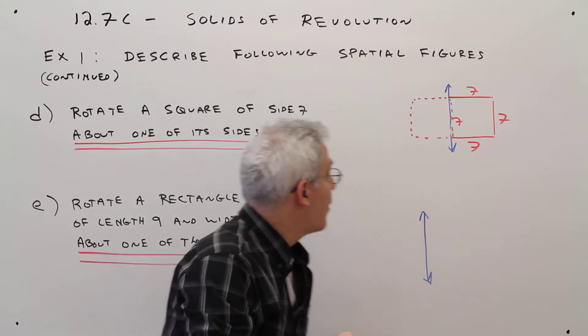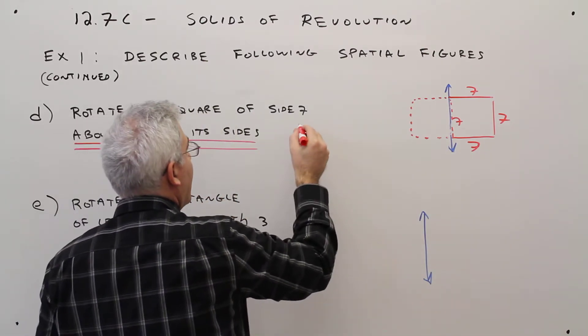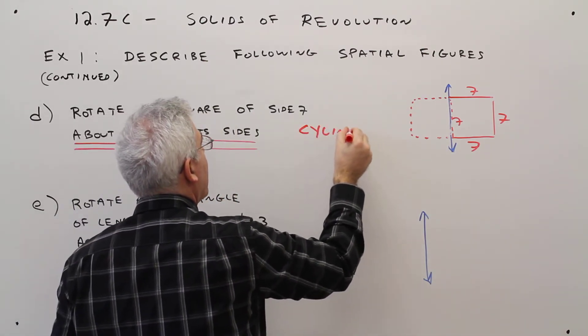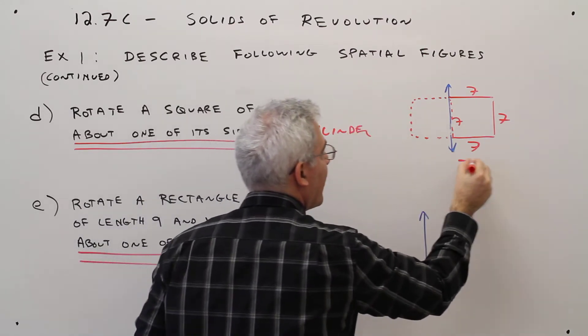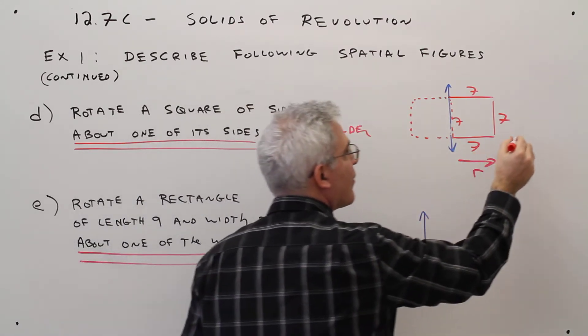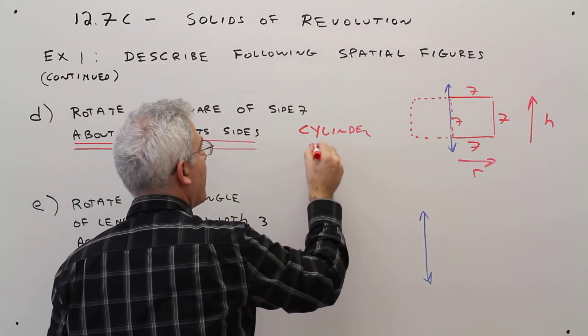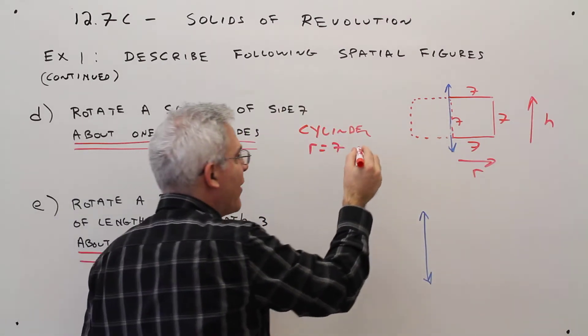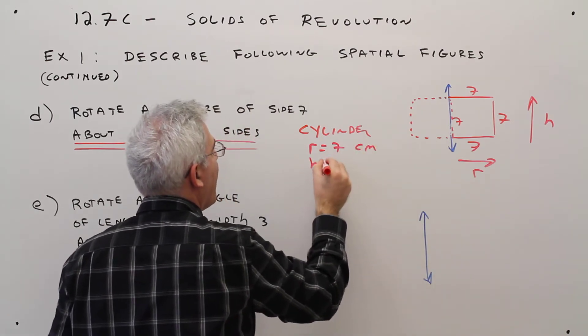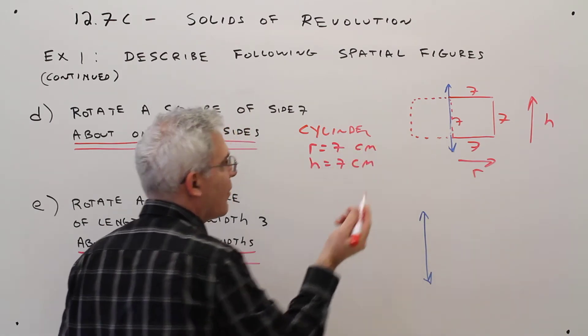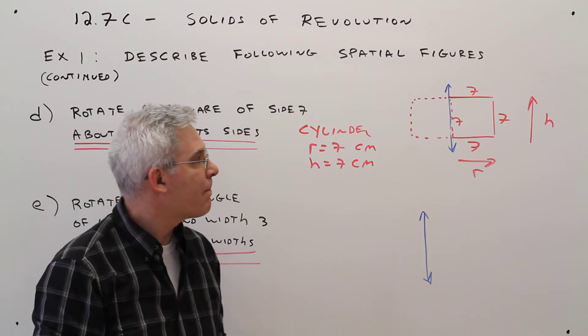Okay. So I'm going to say it's a cylinder. Here, this is my radius, and that is my height. So the radius is 7, I'll just call it 7 centimeters. And the height is 7 centimeters, or units.